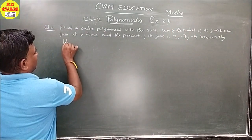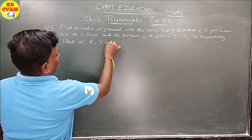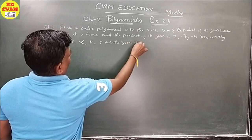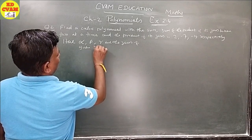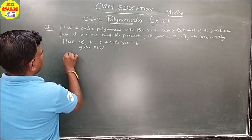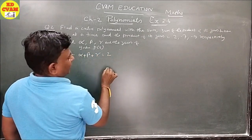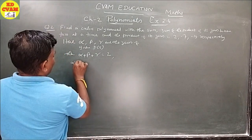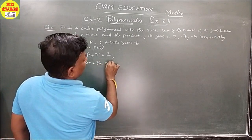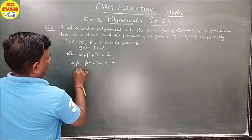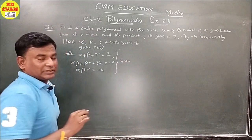Let alpha, beta and gamma be the zeros of the given polynomial P(X). Given: alpha + beta + gamma = 2, alpha·beta + beta·gamma + gamma·alpha = -7, and alpha·beta·gamma = -14.